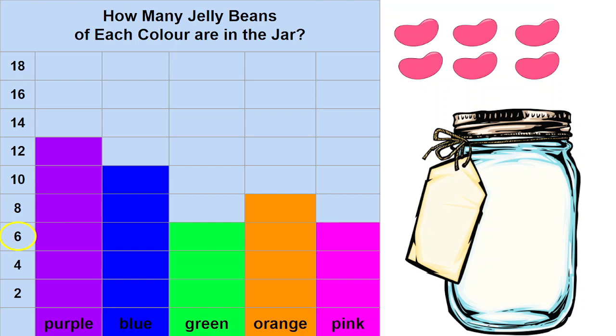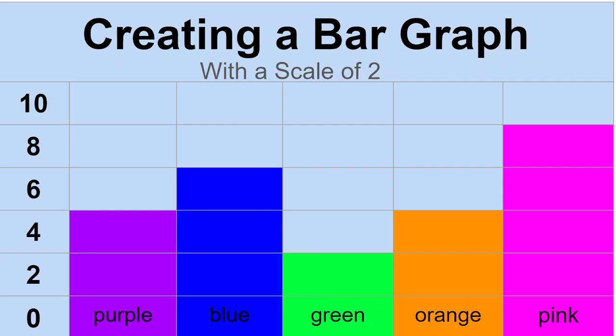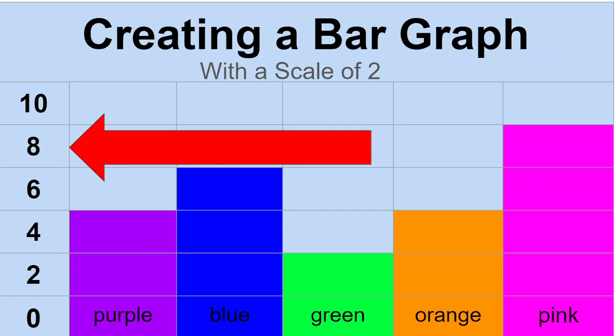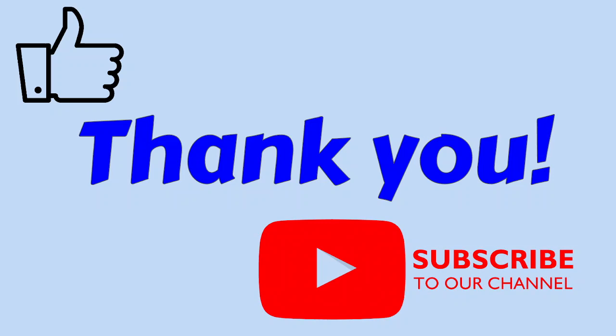Thank you so very much for learning with me. Today we looked at creating a bar graph with a scale of 2. Instead of counting by 1, 2, 3, 4, 5, we were skip counting from 0, 2, 4, 6, 8, and 10. That allows our graph to go to a much higher number than if we had been counting by 1. Thank you so much for learning with me. You did a wonderful job creating a bar graph with me. I would love for you to give this video a thumbs up and subscribe for some more math videos. Have a great day class, bye bye!